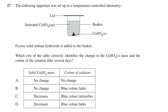Moving on to question 17: the following apparatus was set up in a temperature-controlled laboratory. There is a diagram of a beaker containing saturated copper sulfate and some solid copper sulfate at the bottom, covered by a lid. The question states that excess sodium hydroxide is added to the beaker, and asks which row of the table correctly identifies the change in the copper sulfate solid mass and the color of the solution after several days.